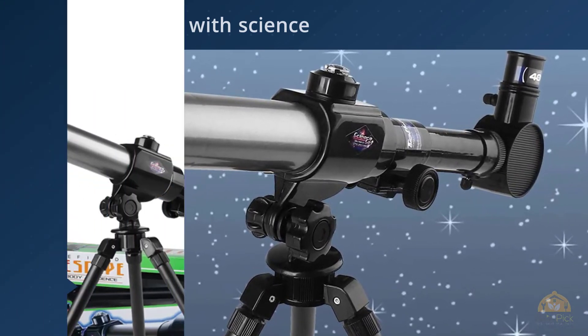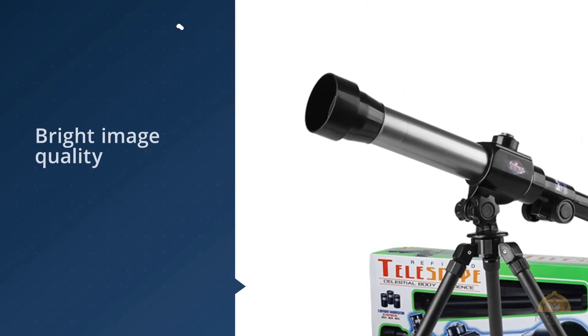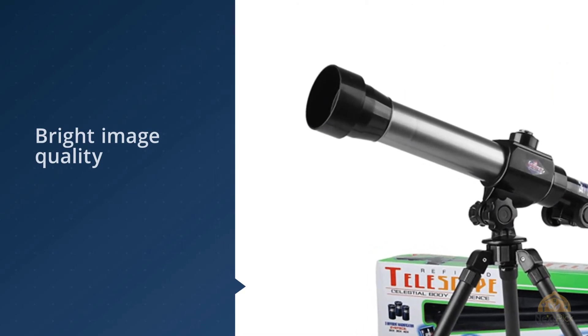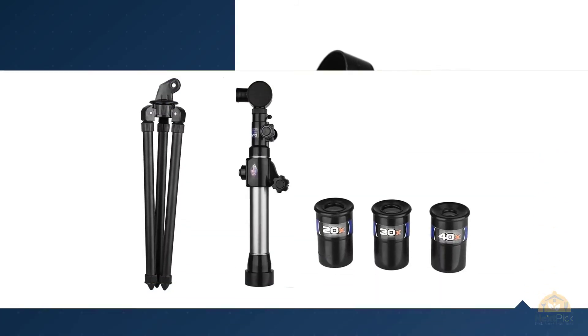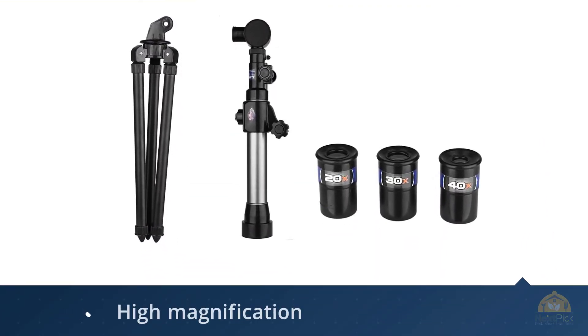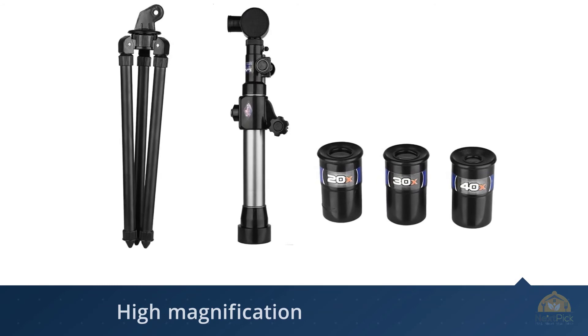As for its specs, the GG and Root kids telescope comes with three different eyepieces that offer 20x, 30x and 40x magnification. Just pop on the eyepiece that you want and peer through the lens.